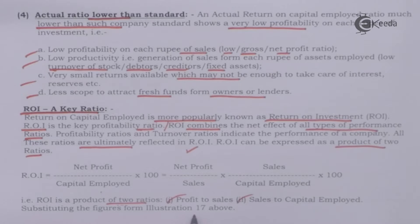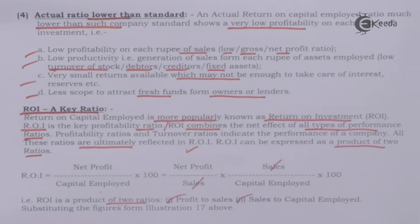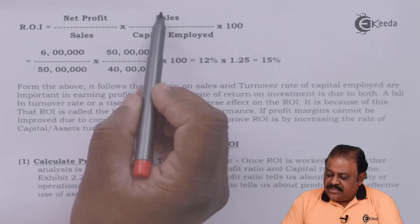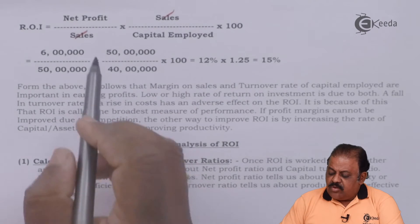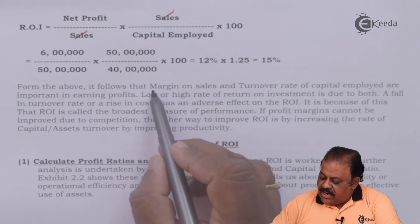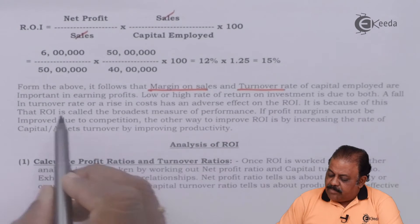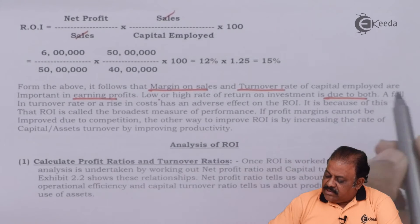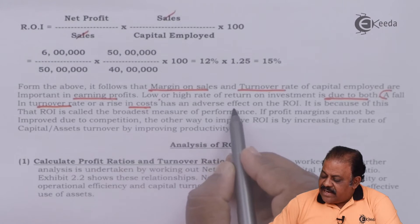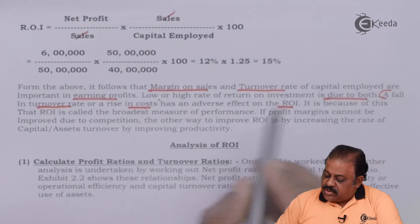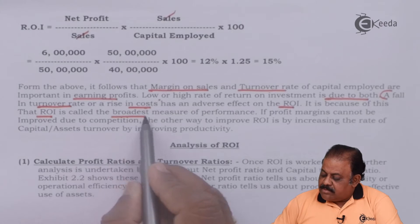Substituting the figures: Return on investment = Net profit / Sales × Sales / Capital employed × 100. Here the sales figures cancel out, so the balance remains Net profit / Capital employed × 100. From this it follows that margin on sales and the turnover rate of capital employed are both important in earning profits. A low or high rate of return on investment is due to both factors. A fall in turnover rate or a rise in cost has an adverse effect on return on investment, which is why return on investment is called the broadest measure of performance.